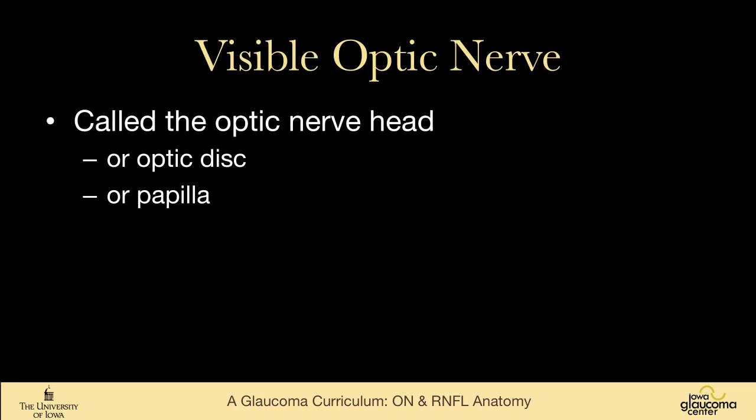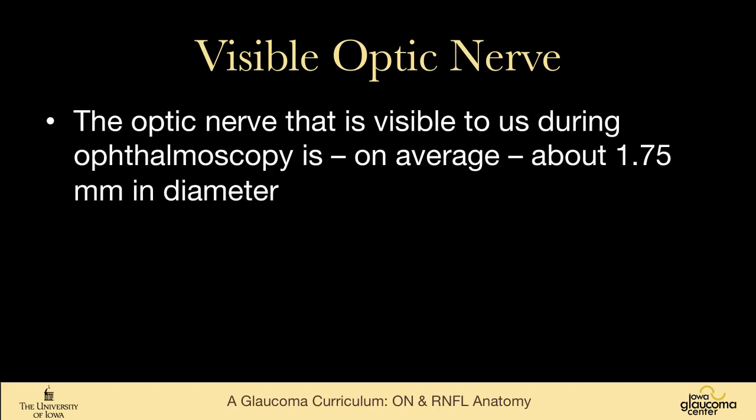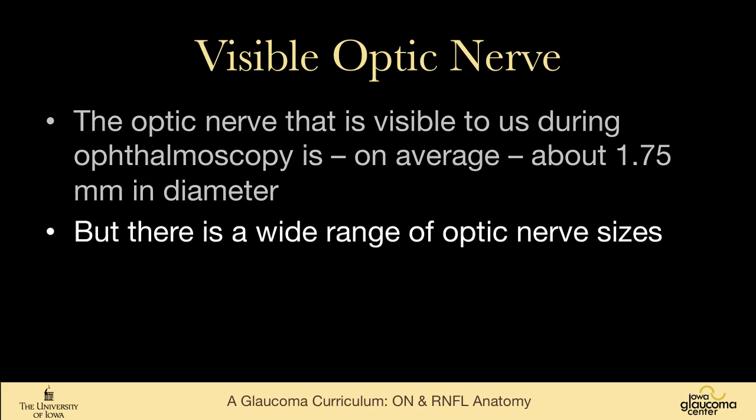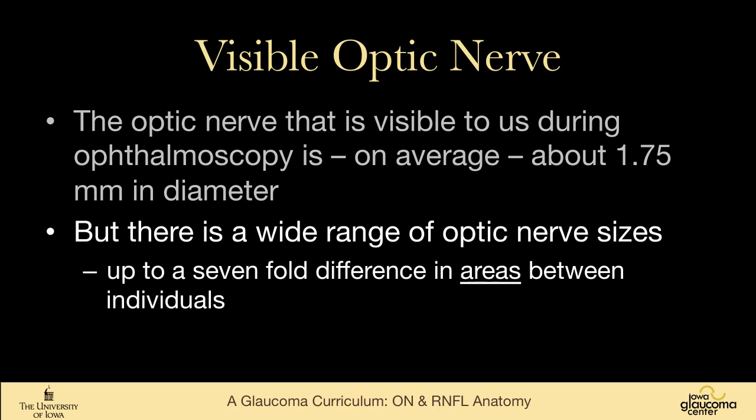The part of the nerve that we can see, the visible optic nerve head, is also called the optic disc or papilla, but most of us would call it the optic nerve head. What we see on average in ophthalmoscopy is about 1.75 millimeters in diameter, but there is a wide range of optic nerve sizes — up to a seven-fold difference in area between individuals.